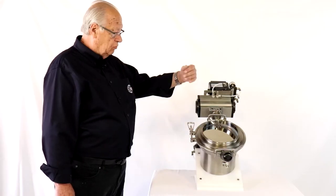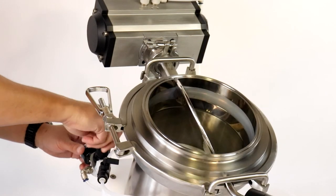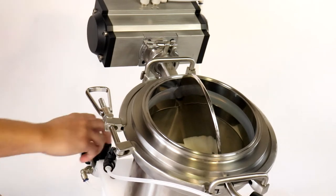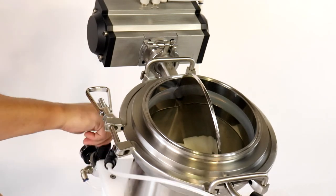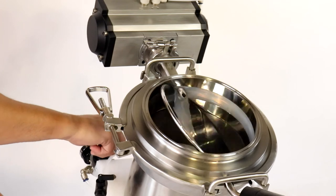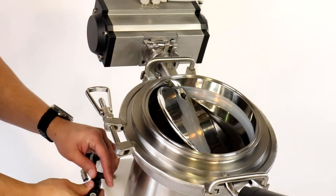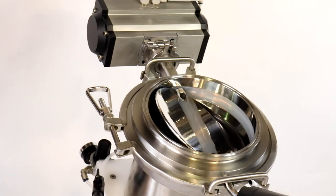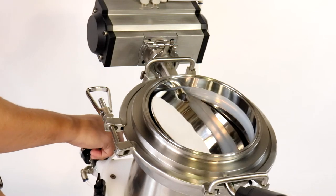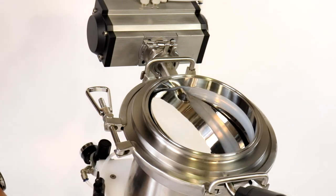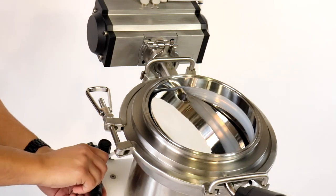What happens is you open the valve, discharge product, and as you're approaching the desired discharge amount, you can, by way of operating the positioner, close the disc to any degree of openness and turn on the vibrator.